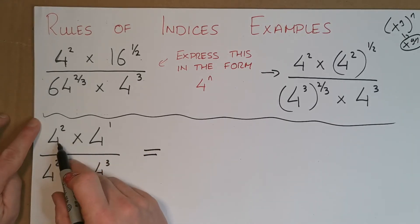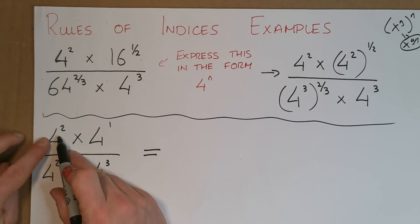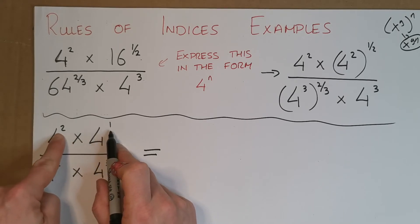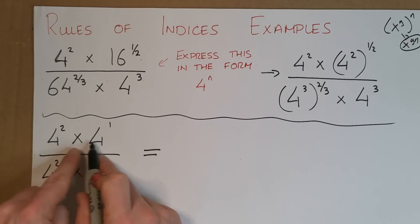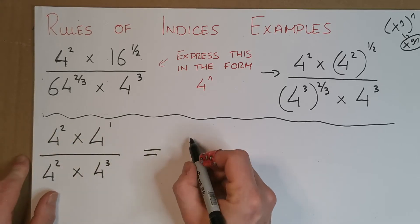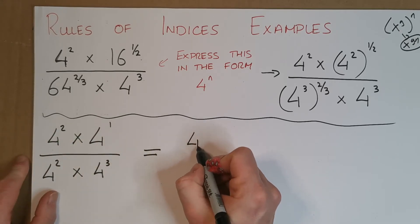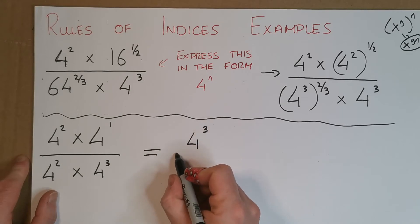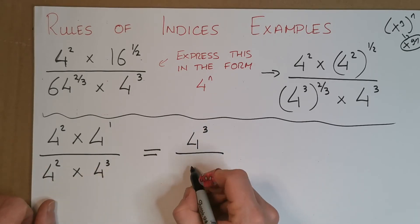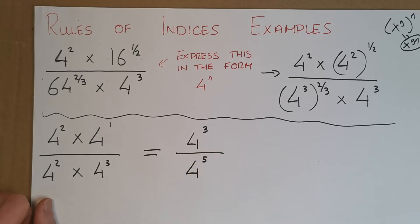Now, on the top we have 4 squared times 4 to the power of 1. This is where we add the powers — 2 fours multiplied by 1 four gives us 3 fours, so the numerator is 4 to the power of 3, or 4 cubed. For the bottom, we add those two powers as well, giving us 4 to the power of 5.